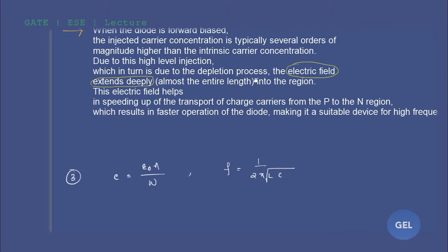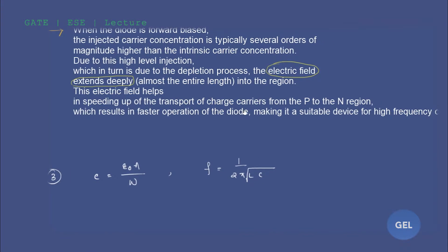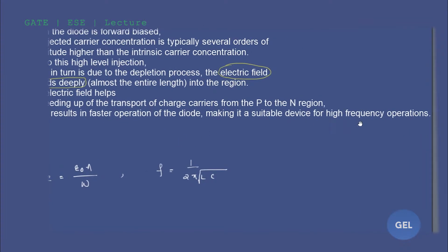Due to this high-level injection, which in turn is due to the depletion process, the electric field extends deeply, almost the entire length into the region. This electric field helps in speeding up the transport of charge carriers from p to n region, which results in faster operation of the diode. This is why we need a PIN diode — because the PIN diode becomes very sensitive towards change in any kind of property.